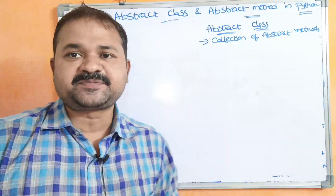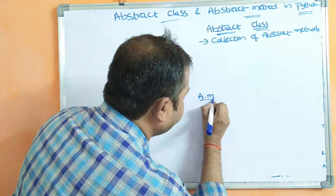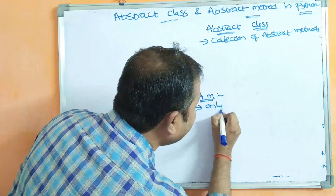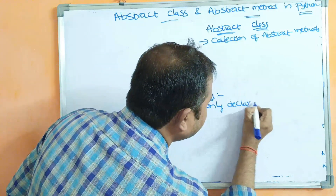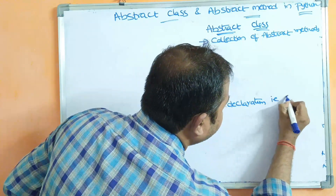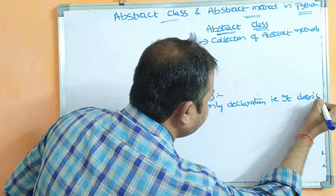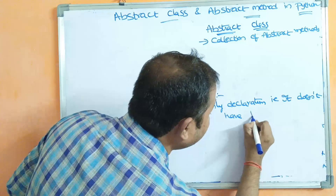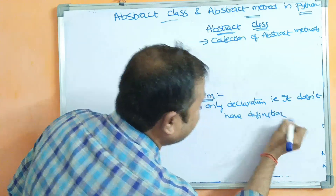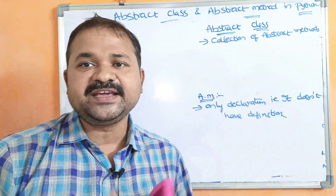Next, what is abstract method? An abstract method contains only the declaration part. It doesn't have any definition — an abstract method doesn't contain any definition, it should contain only declaration.